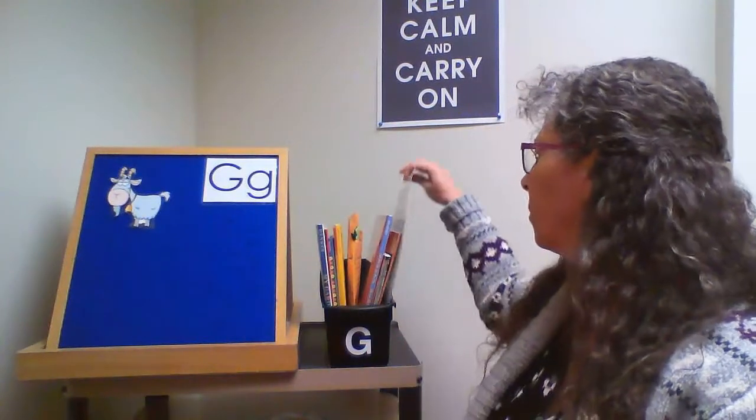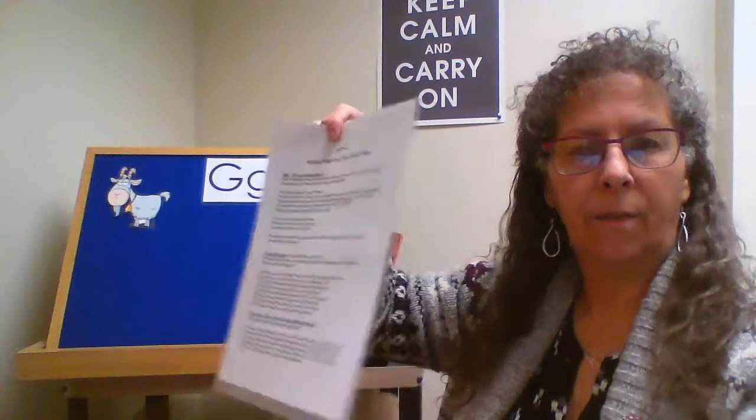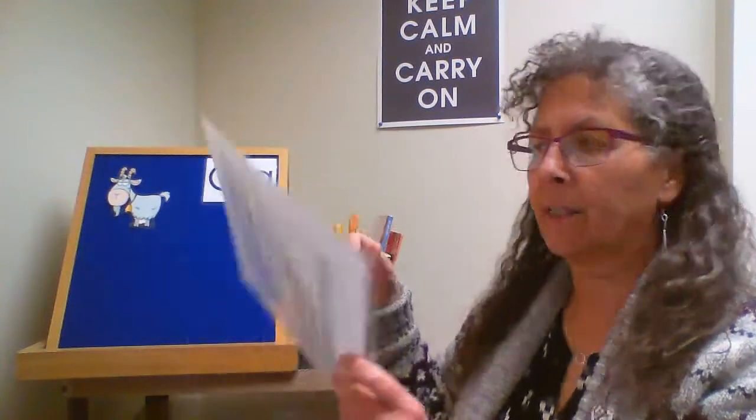Then we read a book that has a letter G in the title, and we introduce some other extension activities. We have a kit with a list of a variety of extension activities to choose from, and whichever storytime provider is using the kit just chooses the activities that work best for them.